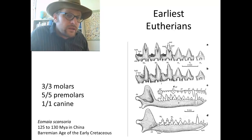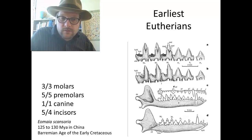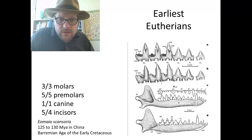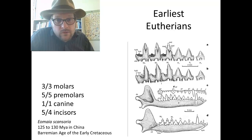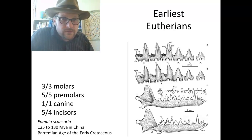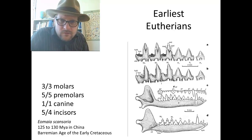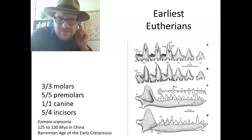Eomaia also has one canine above and below, and five incisors above but only four below — more incisors above is another marsupial characteristic. So Eomaia has the three-molar condition of placental mammals, but most of the rest of its anatomy appears more marsupial-like. There are also some differences in the wrist and ankle bones that indicate it is a eutherian, but overall it was more marsupial-like than placental-like.